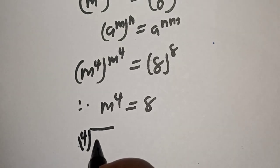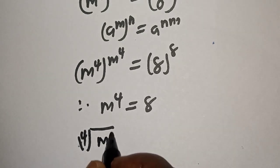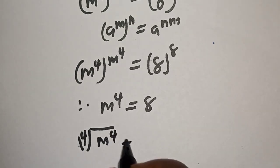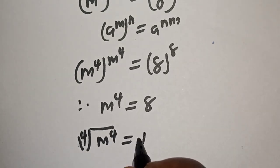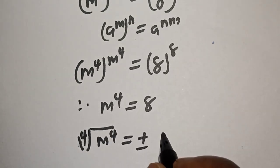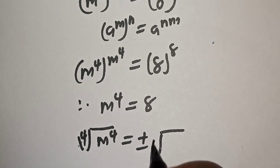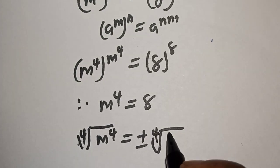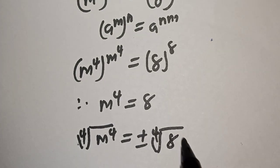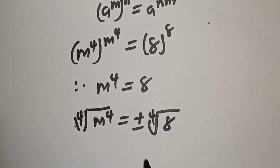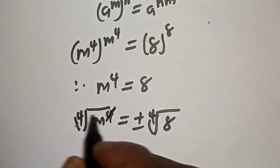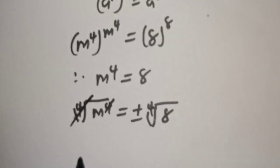Fourth root of m raised to power 4 is equal to plus or minus the fourth root of 8. This will cancel this.